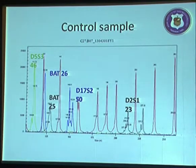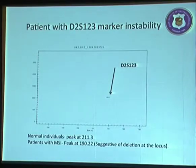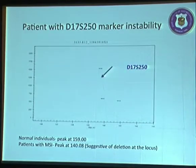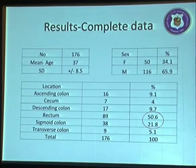The control sample demonstrated the 5 NCI panel markers: D5S346, BAT25, BAT26, D17S250, and D2S123. Results showed that all markers — D2S123, D17S250, BAT25, and BAT26 — showed deletions at the locus.